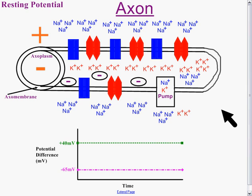The potential difference is negative 65 millivolts. If you watch the bottom of the screen, if you were to measure that over time, you would just register negative 65 millivolts. Nothing in particular is happening.